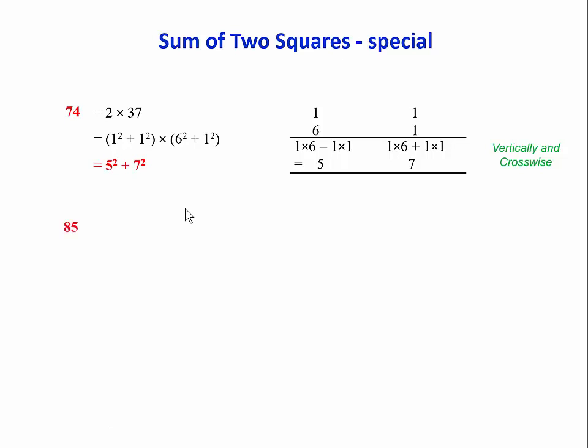Another example, 85, we factorize it. We recognize that we can express both of these as a sum of squares. 2 squared plus 1 squared and 4 squared plus 1 squared. And we do the same thing. We put the 2, 1 and the 4, 1. We multiply vertically and subtract. We get 7. We multiply crosswise and add. We get 6. So 85 is 7 squared plus 6 squared.